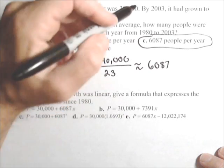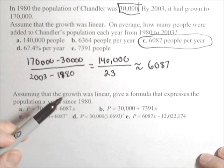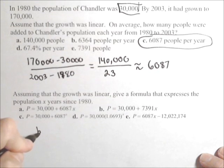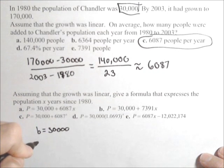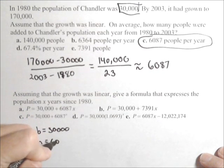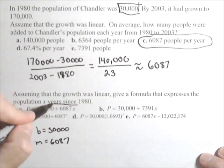That automatically makes 30,000 our initial amount or our y-intercept. So we know that 30,000 will be our b for our linear function. And we know our slope, we found it last time, is 6,087. And we know it's increasing, so it needs to be plus. So it has to be A.